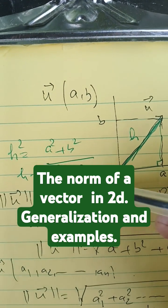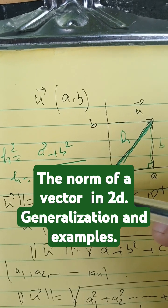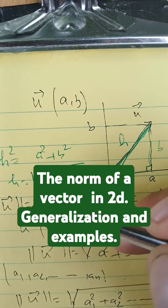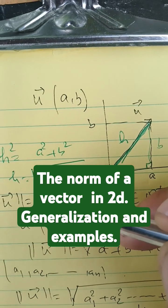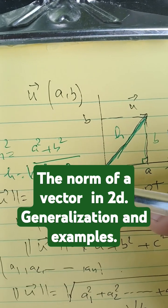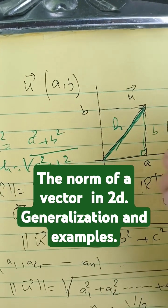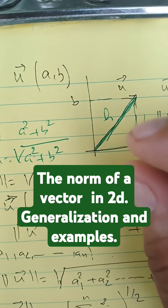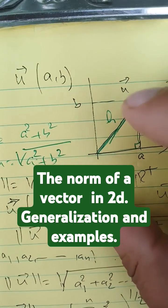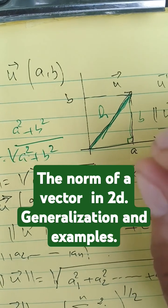the norm of u as the square root of a squared plus b squared. Next we extend this definition to 3D and nD, and we use the notation that you will see in advanced books. This is just a quick reminder and the definition.